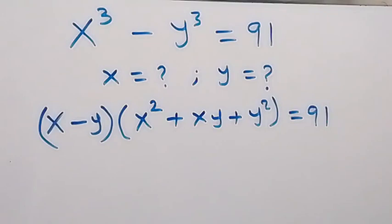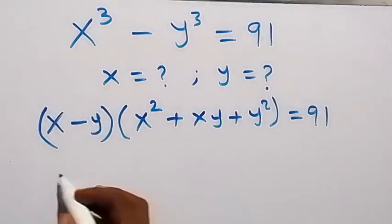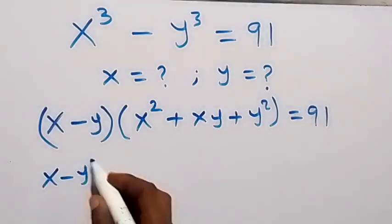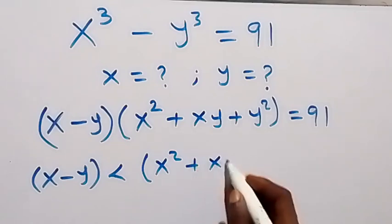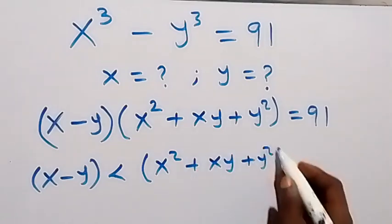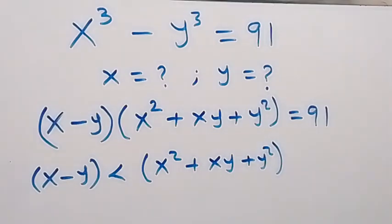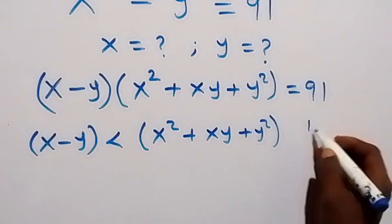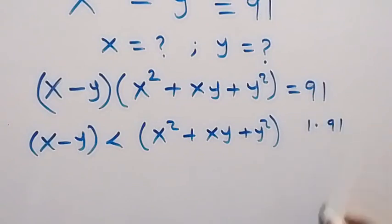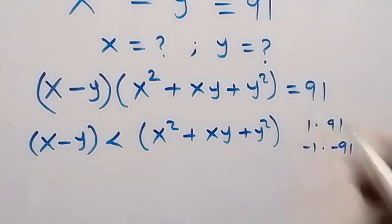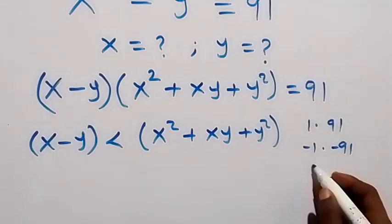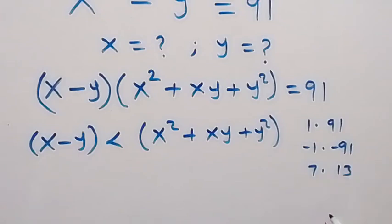It means that we multiply two numbers and the product gives us 91. We can separate 91 as 1 multiplied by 91, or minus 1 times minus 91. Or we can say that is 7 times 13, or minus 7 times minus 13.